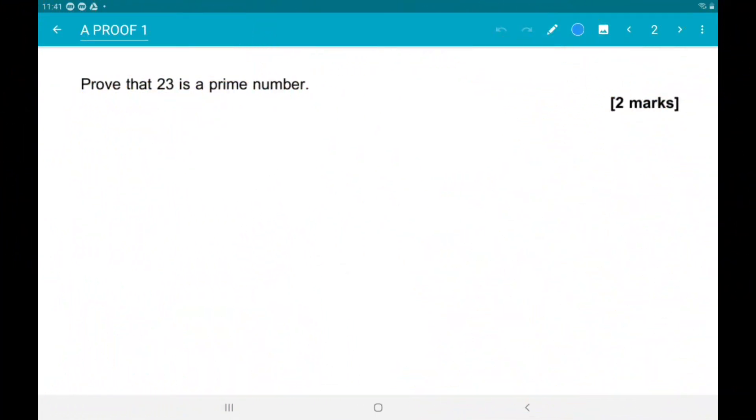Ok then, first up, we want to prove 23 is a prime number. So, lots of ways we can do this. The way I'm going to do it is by thinking about its square root.